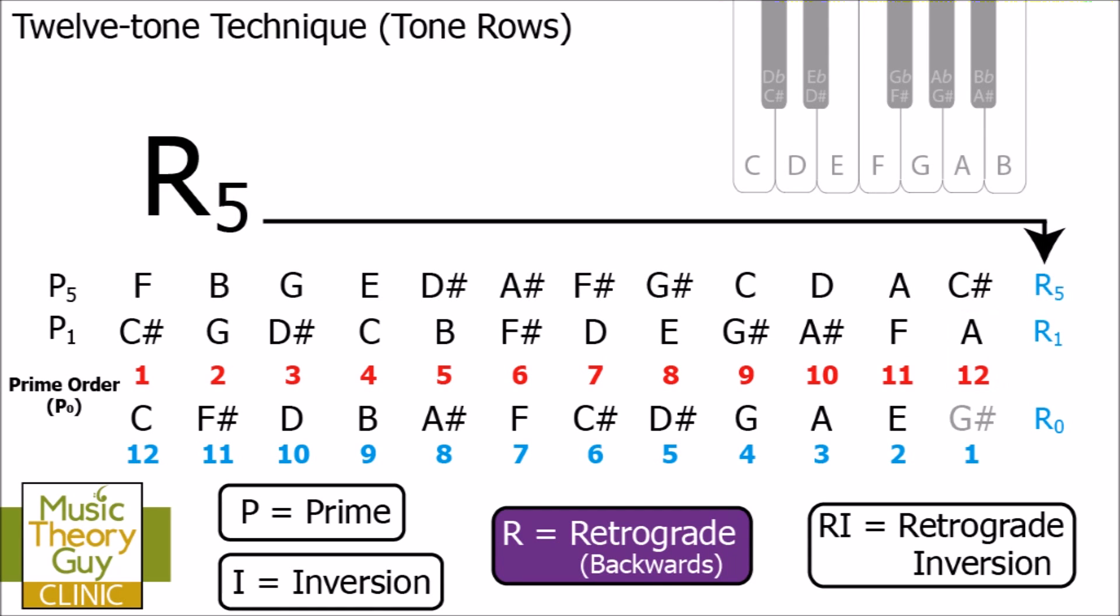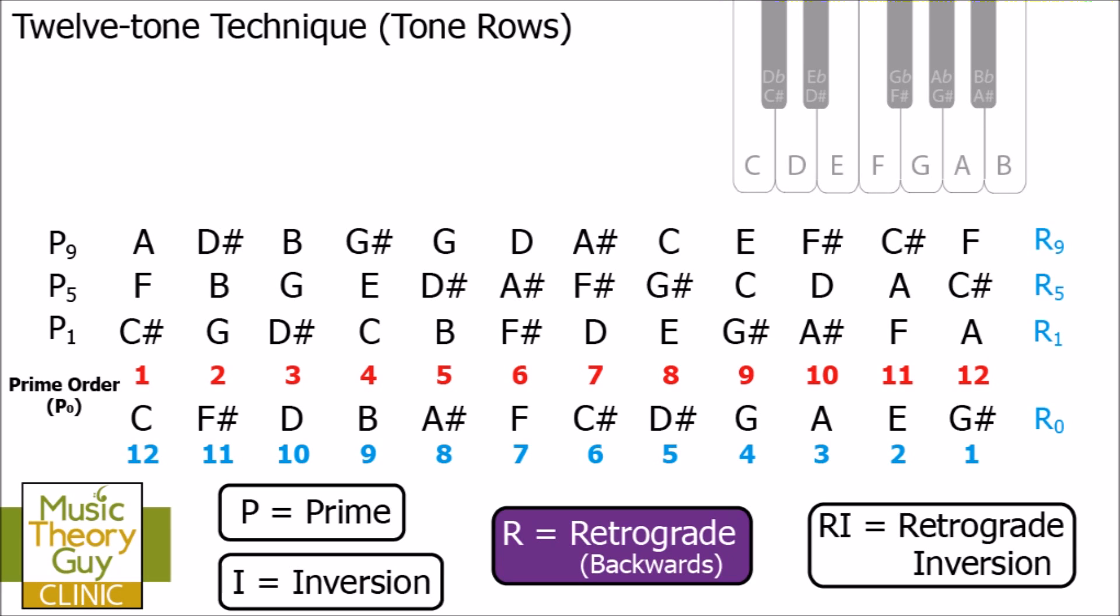R-5. So, we now know that R-5 is just P-5 backwards. But imagine you've been asked to work out R-9. The way to work this out is to work out P-9 first. And by having the completed row of P-9, you can then work out what R-9 is. So, the first note of R-9 in this case would be an F.